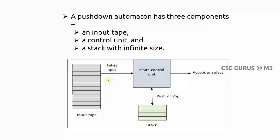The model of pushdown automata has an input tape: the input string is read through the finite control unit, and using the stack you determine whether the given string is accepted or rejected. Comparing with the finite automata model, in FA you don't have the stack — the string is taken one symbol at a time, moving from state to state, and if it reaches a final state it is accepted. In PDA, you additionally use the stack to determine the states.